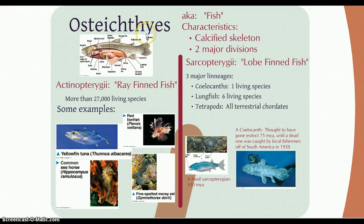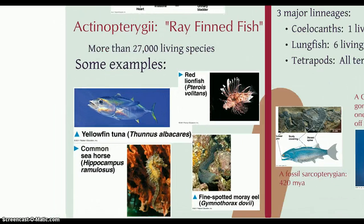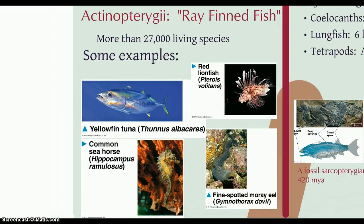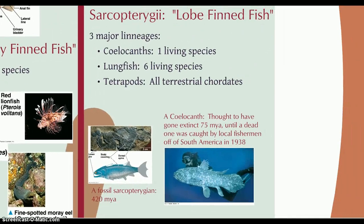Osteichthyes — oste meaning bone — are the bony fish, with a calcified skeleton rather than a cartilaginous one. There are two major groups: actinopterygii, and probably more pertinent to us, sarcopterygii, the lobed-fin fishes. There are some outlier branches of these fish, but the significant group here are the tetrapods, which include the ancestors to land animals.